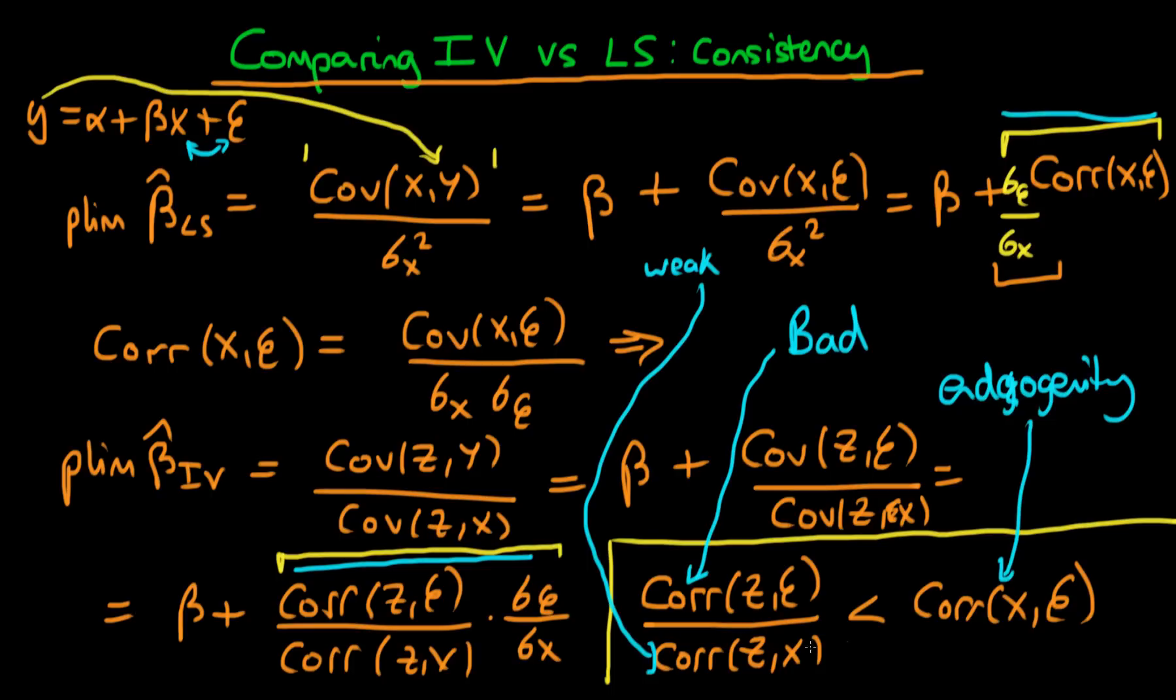However if we have a very weak instrument so this bottom here is very very small maybe around zero, then even a slight sort of badness of our estimator or our instrument rather will mean that it is better to use least squares than instrumental variables.